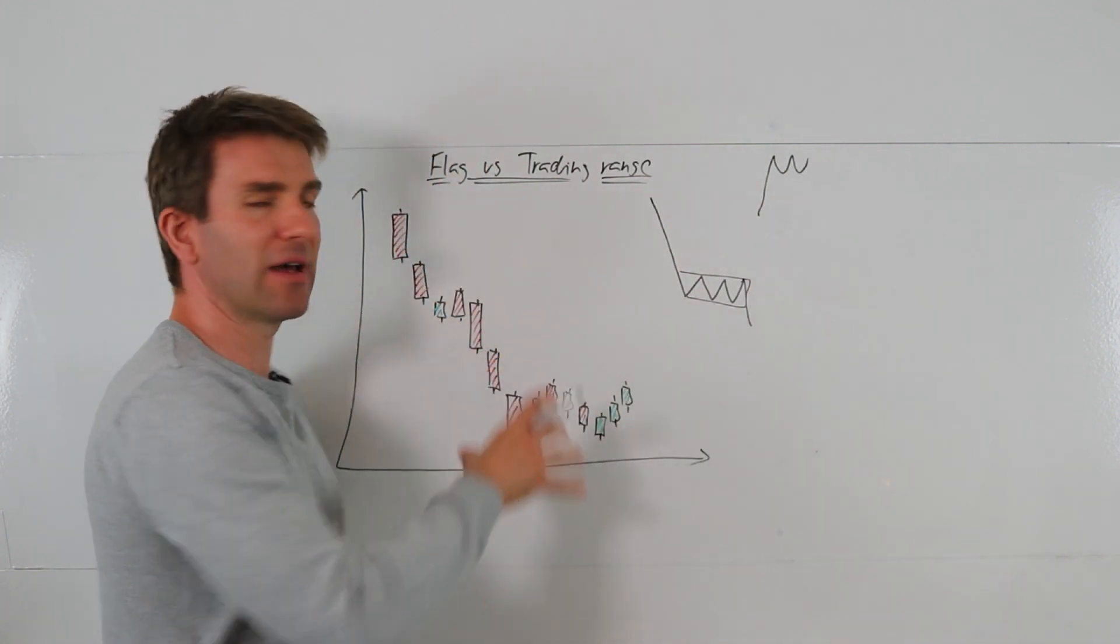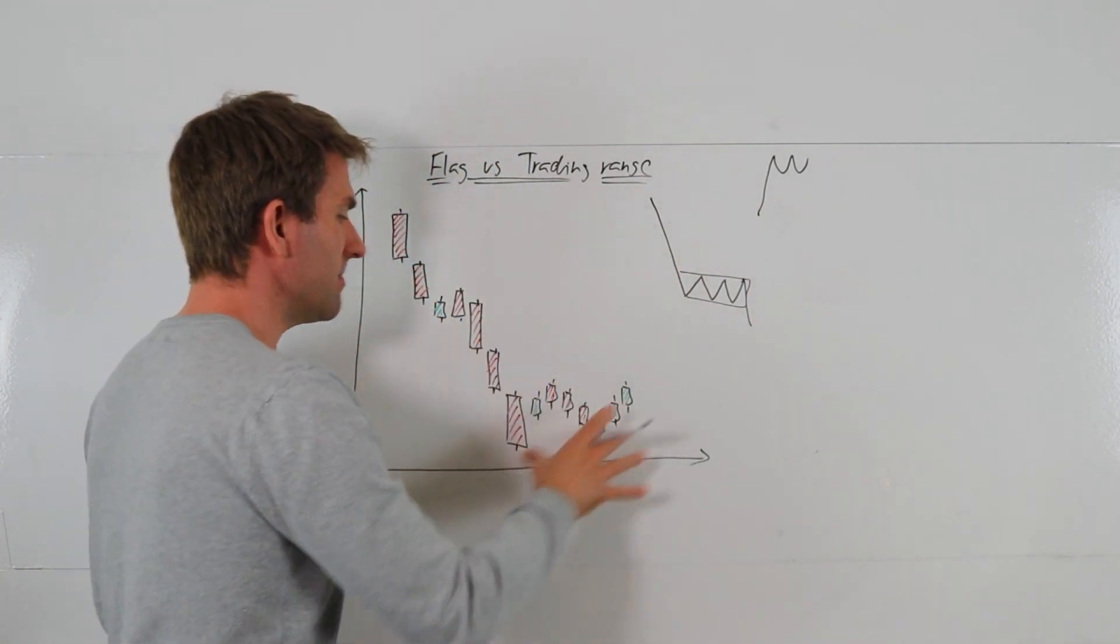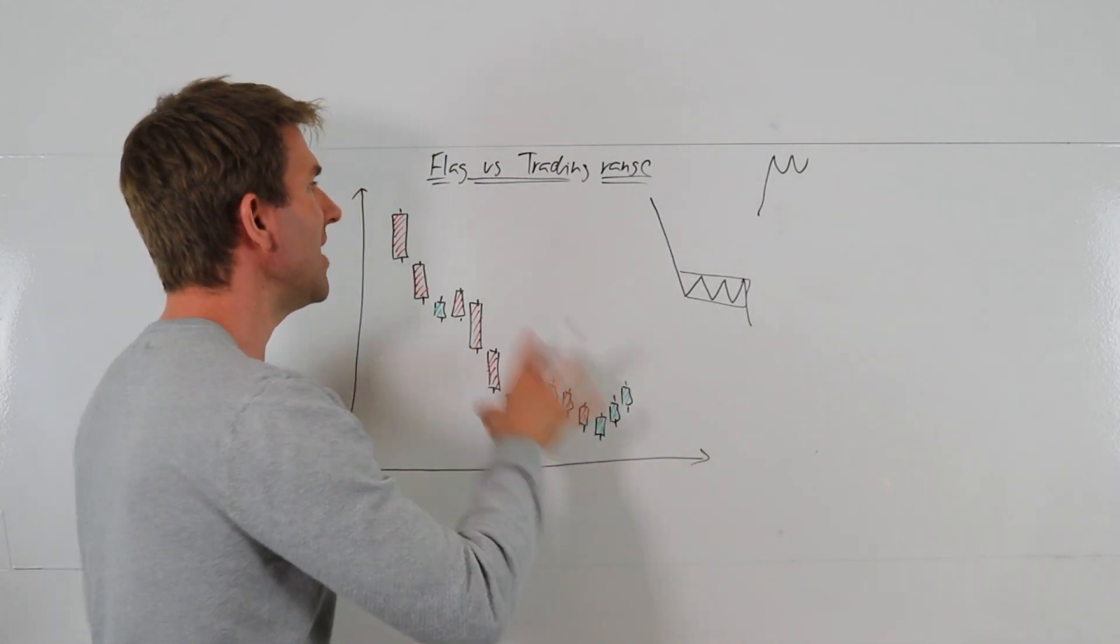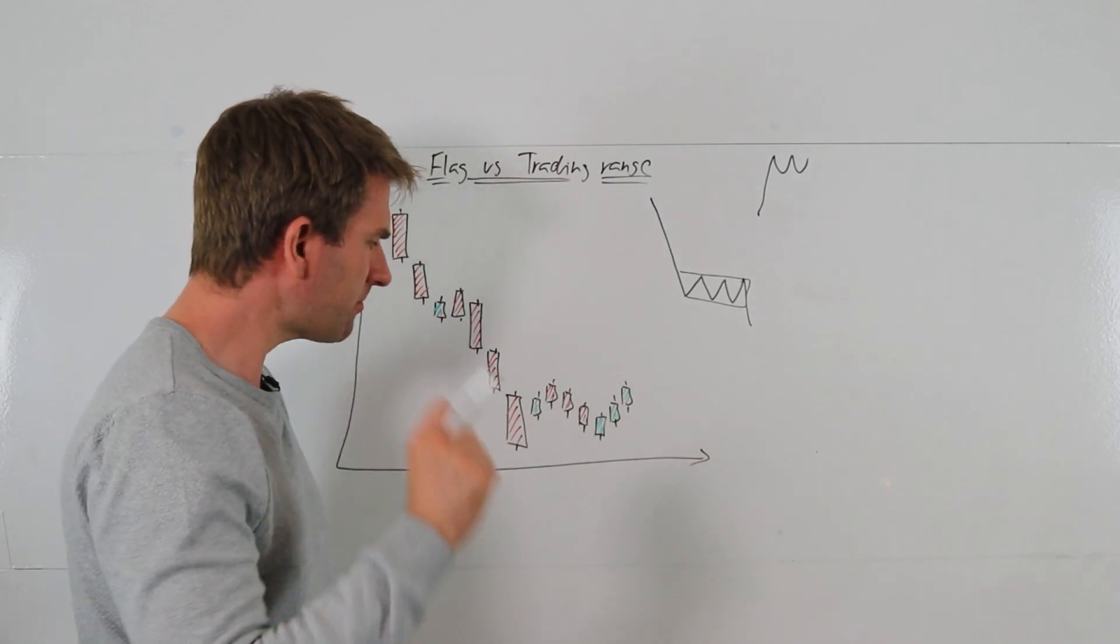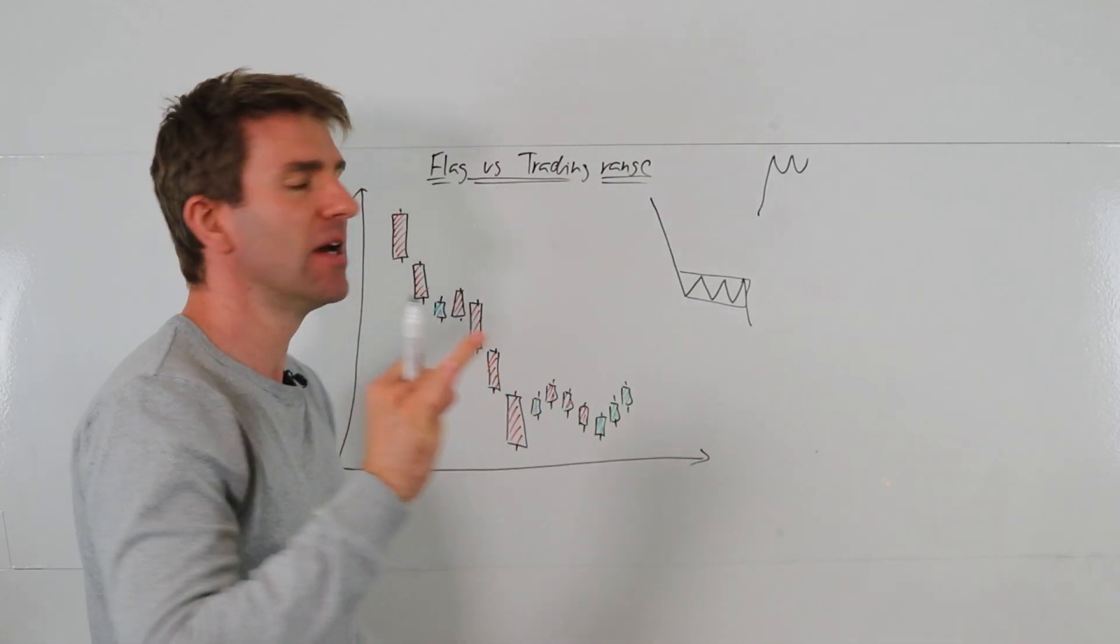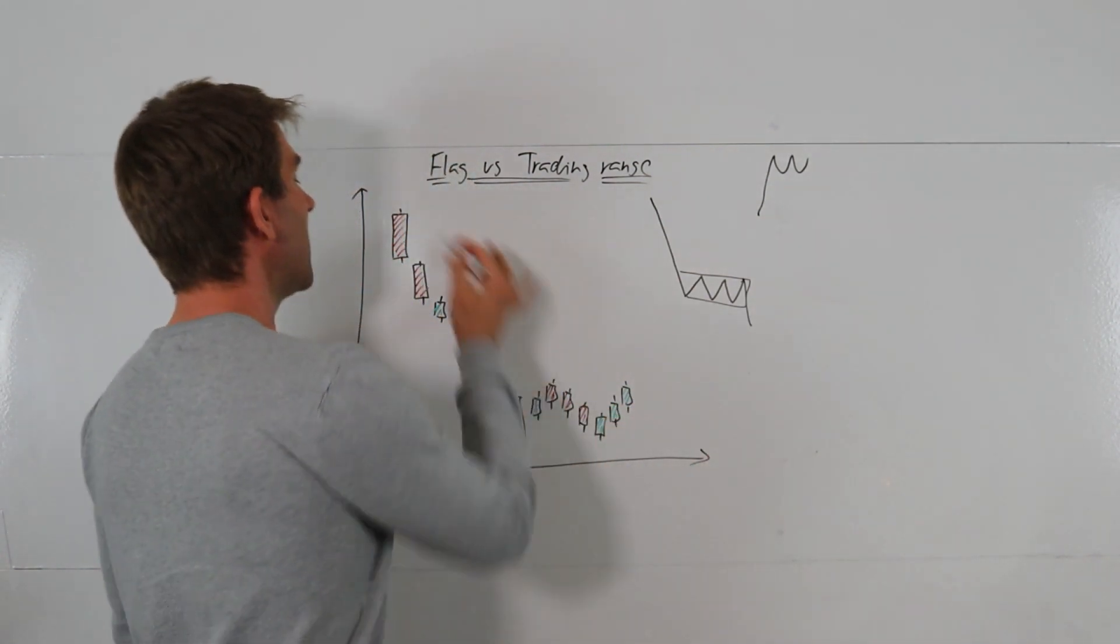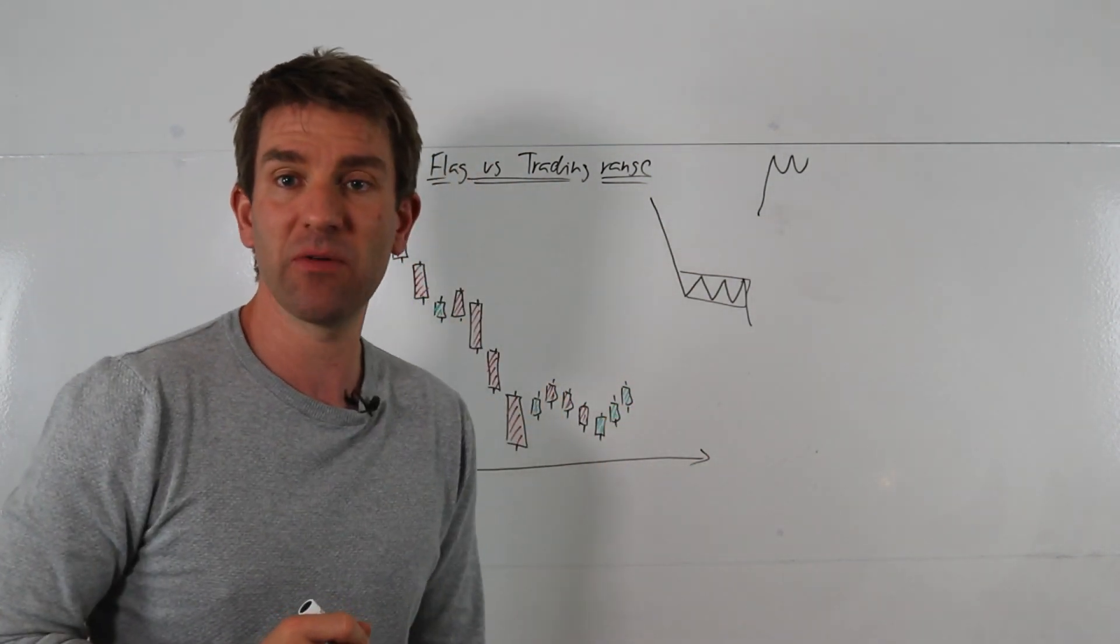So what happens when we have something like this? How do we treat it? Well, this to me now has moved from a flag situation to more of a trading range scenario. And some of the things that you can do to get the idea of this is to look at how long this has been going on compared to how long the movement down has been.